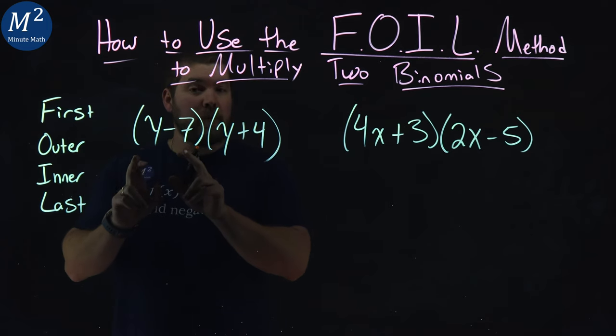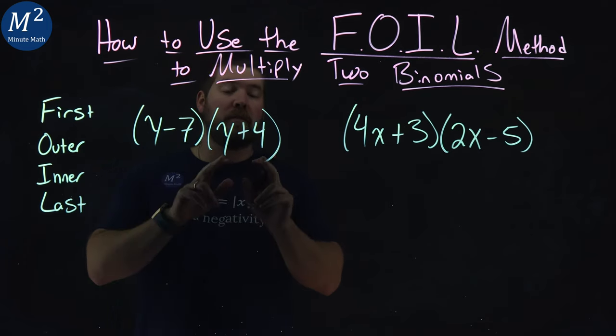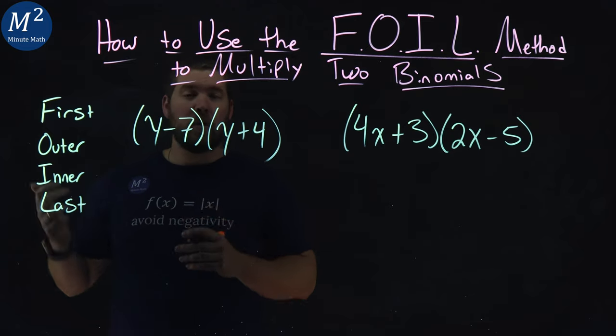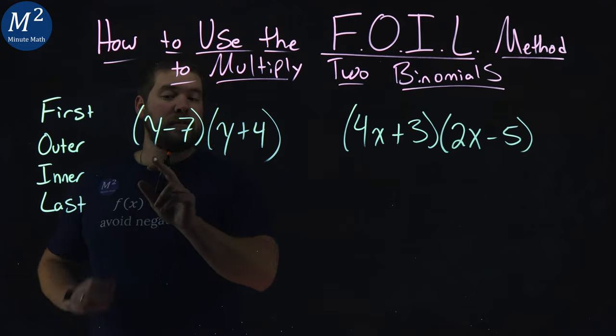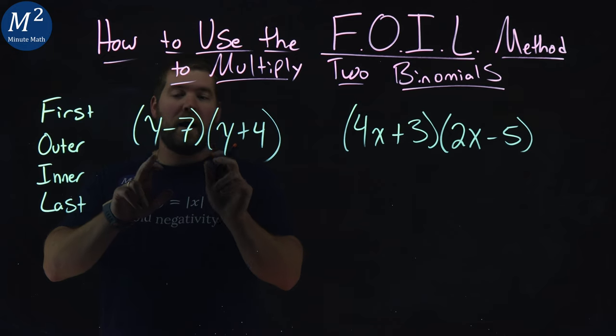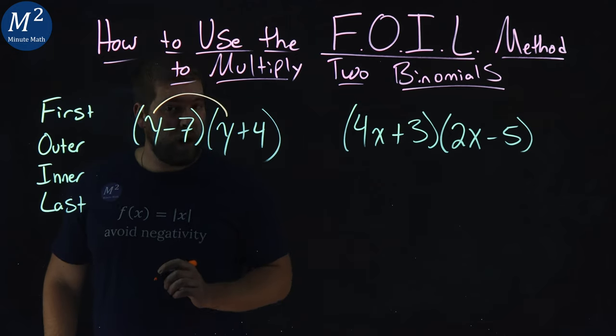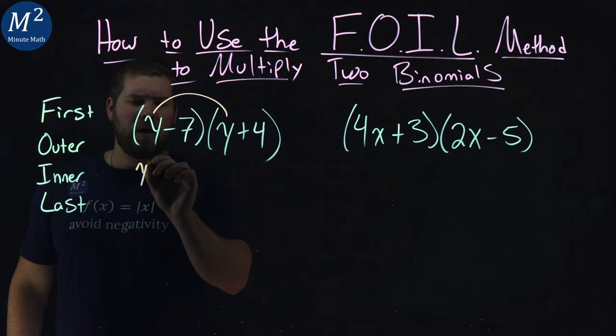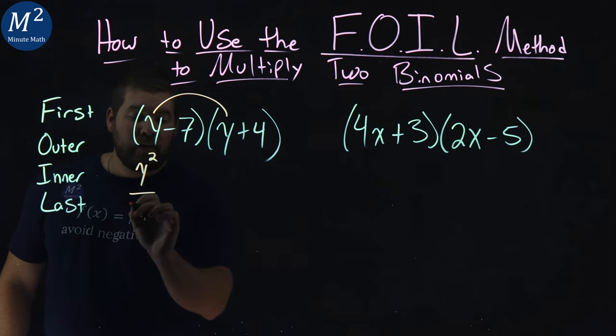All parts of the first parentheses get multiplied by all parts of the second one, and when we use FOIL, we ensure that. Let's start with the first values of each one, y's. y times y. Well, y times y is y squared. That's the first.